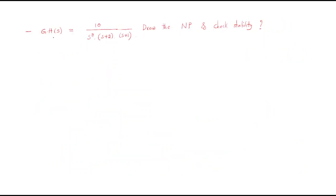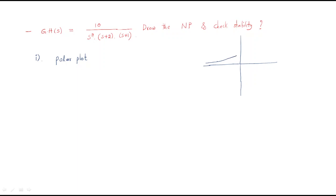The next problem is: GH(s) = 10 / (s² × (s+2)(s+1)). Draw the Nyquist plot and check the stability. First, draw the polar plot. The polar plot for this function is approximately a curve starting from one point and ending at another — the polar plot starts here and ends at this point.